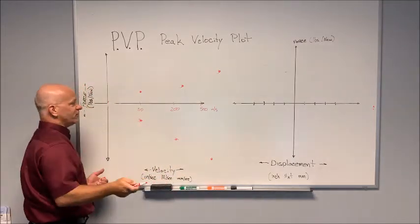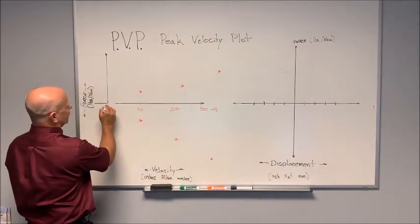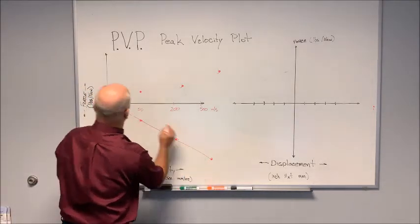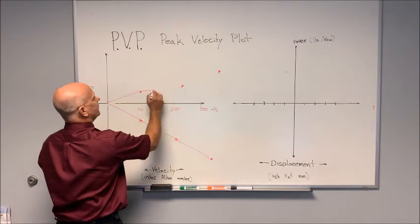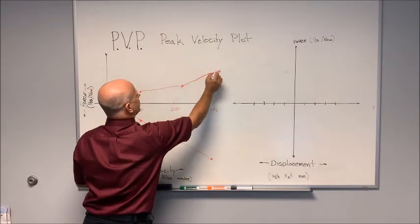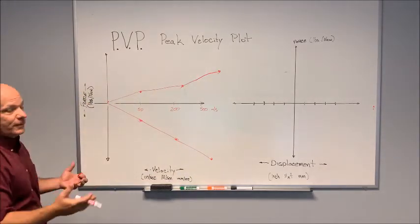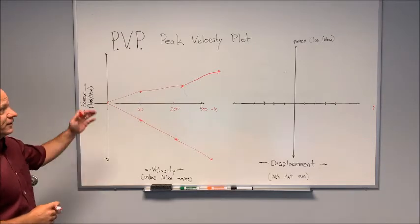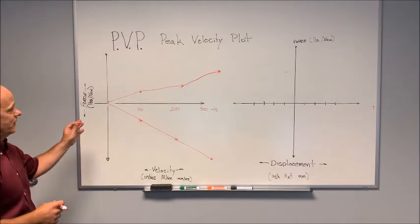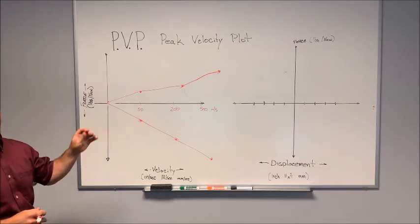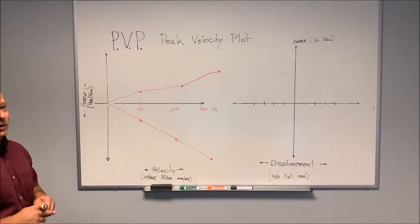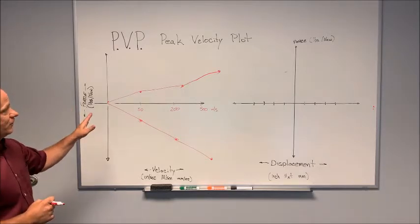So what does the PVP do? The PVP just draws a straight line from point to point to point. That's what a PVP is — peak velocity plot. Nice and simple. It is an easier line to send out to your customer; it has less questions involved. That's what a PVP does.